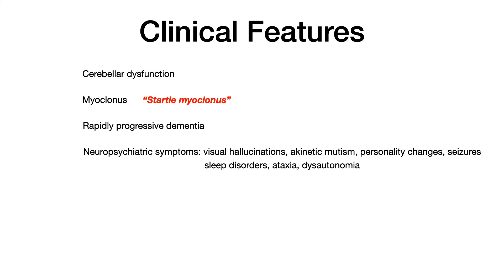Clinically, here is how CJD is presented on exams — with buzzwords to identify it. Key features include cerebellar dysfunction, myoclonus (specifically startle myoclonus, where a startling stimulus puts the patient into a state of myoclonus — those involuntary brief muscle twitches), and rapidly progressive dementia. The dementia symptoms start within zero to two weeks, as opposed to Alzheimer's, which evolves over a much longer period.